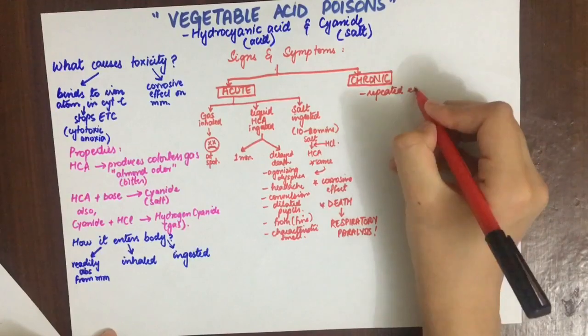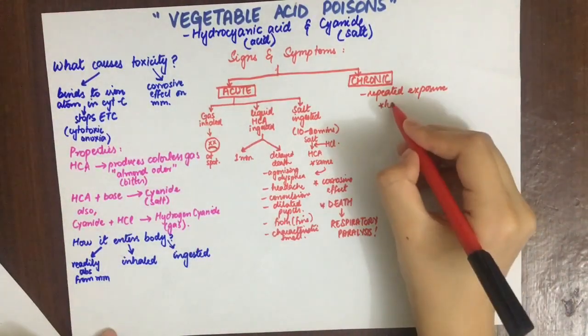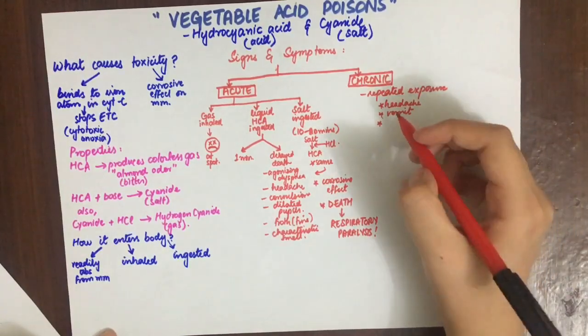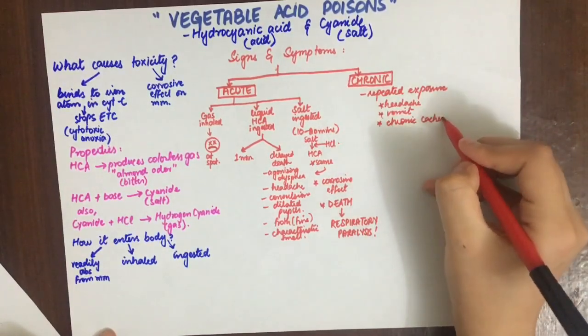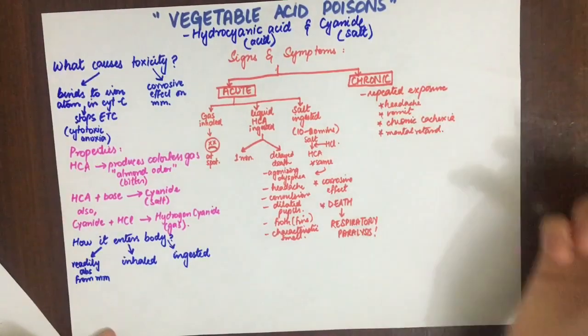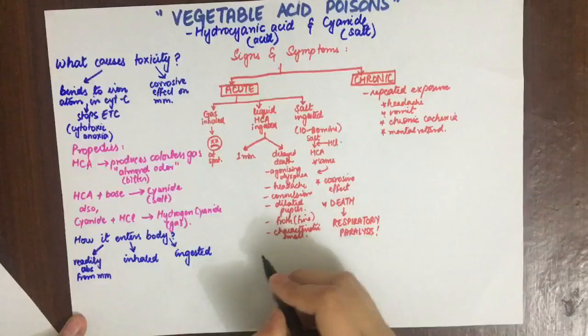Chronic poisoning is due to repeated exposure to lethal or non-lethal doses of hydrocyanic acid or cyanide. It occurs in photographers and gilders who use materials which contain cyanide. It appears as headache, vomiting, chronic cachexia or wasting, and mental retardation.